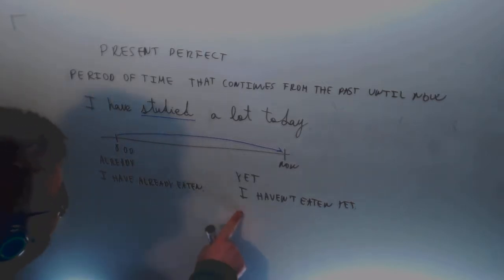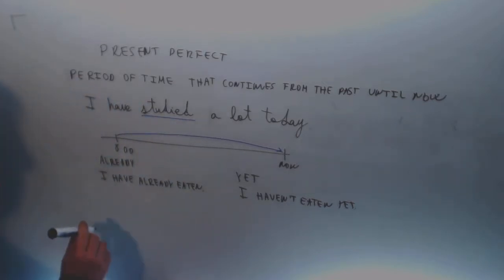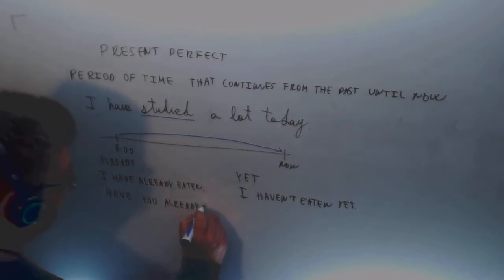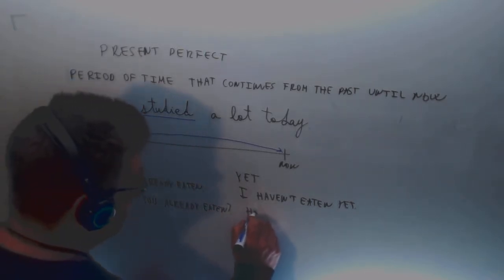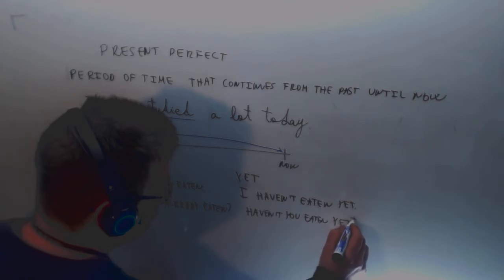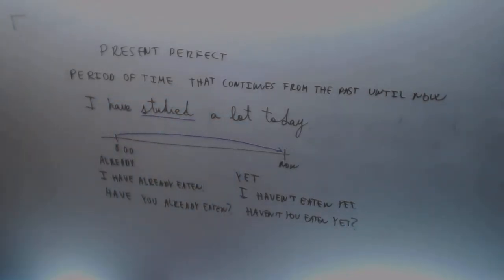In interrogative you can use it two ways. You can say 'Have you already eaten?' - has comido ya? Or you could also say 'Haven't you eaten yet?' - no has comido todavía. It's the same but not the same.